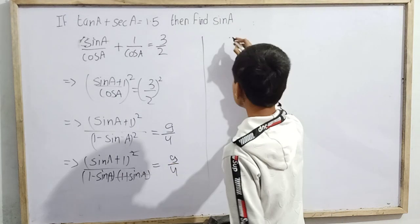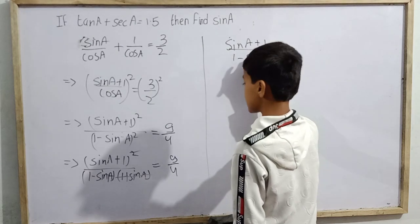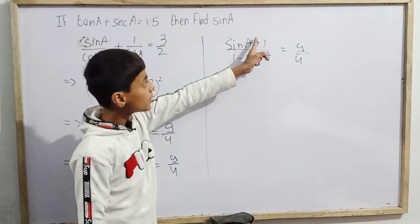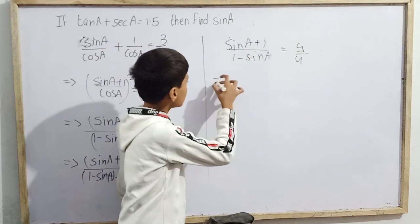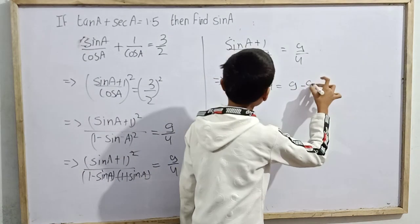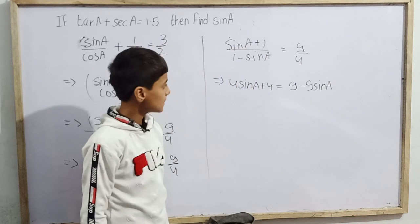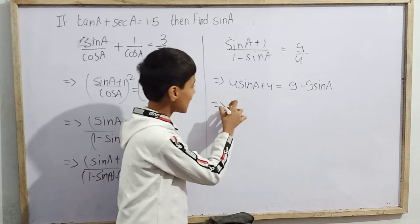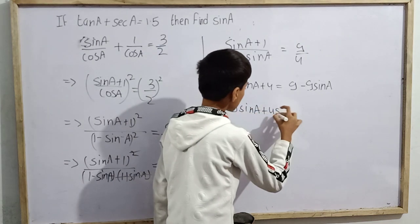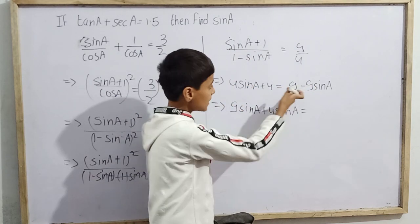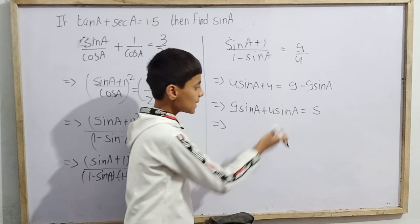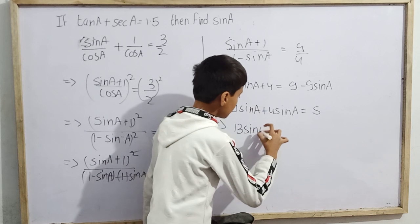Now we apply cross multiplication: 4 × (sin(a) + 1) = 9 × (1 − sin(a)), which gives 4·sin(a) + 4 = 9 − 9·sin(a). Bringing the sin(a) terms together: 9·sin(a) + 4·sin(a) = 9 − 4, which simplifies to 13·sin(a) = 5.